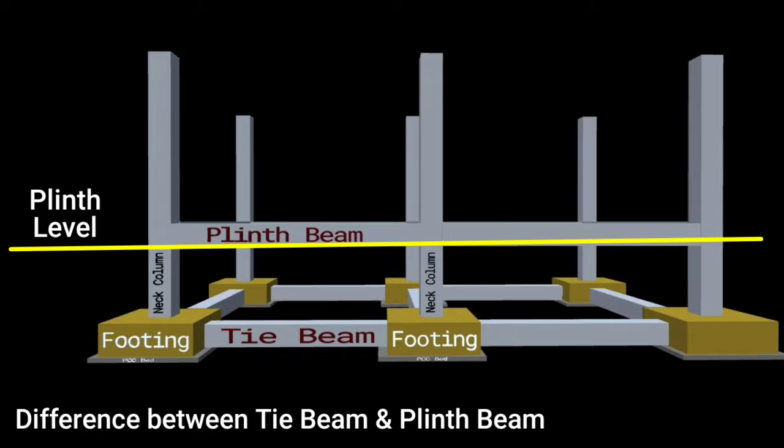When the tie beam is provided at plinth level, it is known as plinth beam, which means the only difference is the height at which they are provided. Plinth beam is only provided at plinth level, but tie beam is provided anywhere above or below the floor level.